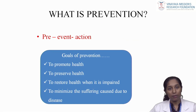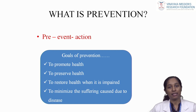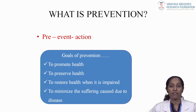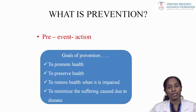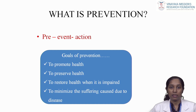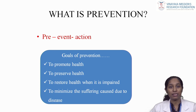What is prevention? The word prevention itself is pre-event action — that is the action of stopping something from happening or arising. Disease prevention involves certain actions or activities designed to protect individual or a population from actual or potential health threats and their harmful consequences. Why is prevention important? It is important so as to preserve health, to restore health when it is impaired, and to minimize suffering and distress caused due to diseases.